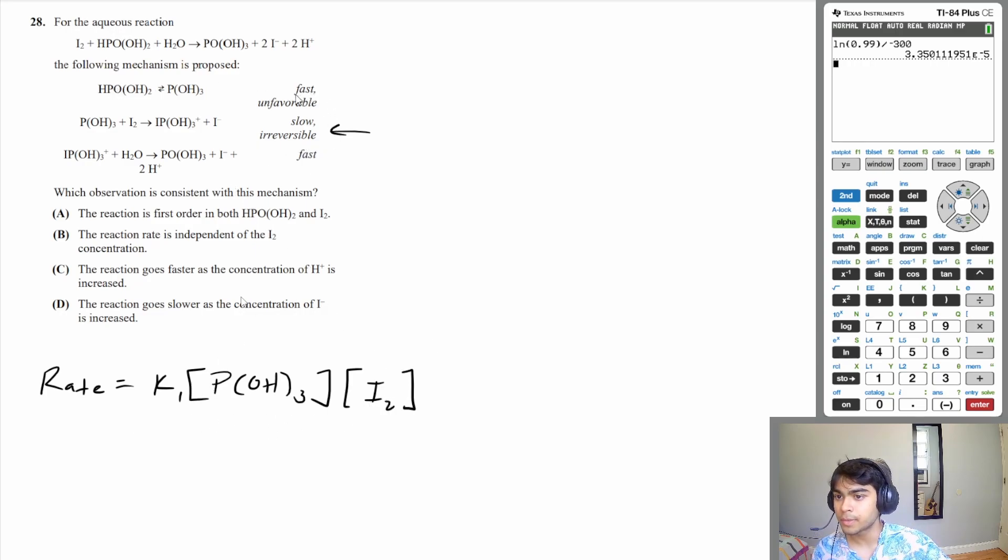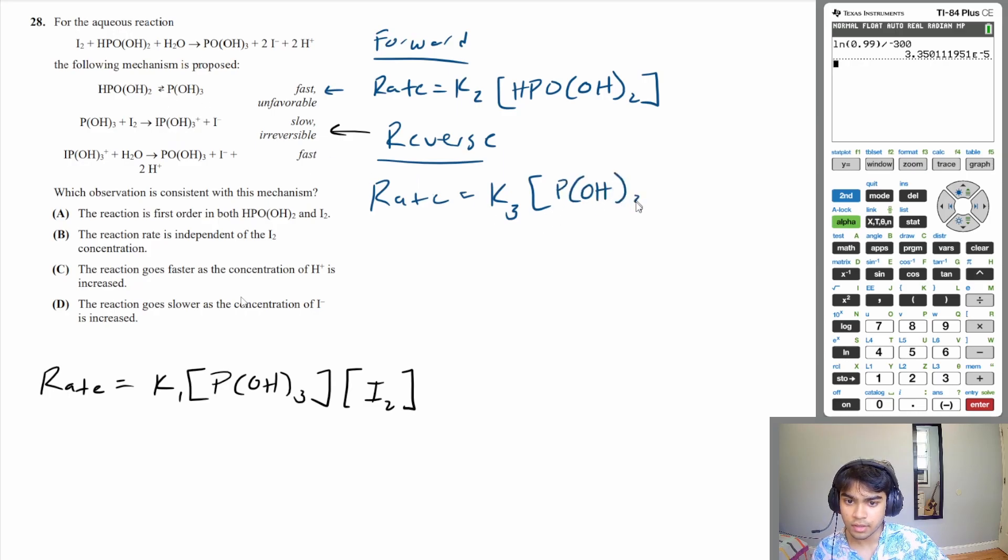Well, you have to look at your fast equilibrium step, which is this one here. Now, this reaction is helpful because you know that the rate of the forward reaction is going to equal the rate of your reverse reaction. So what is going to be the forward reaction? Let's say forward reaction. Well, the rate is equal to, let's just call it K2, K2 times the concentration of your reactant, which is HPOOH2. And then the reverse reaction is going to have a similar format. So rate is equal to, let's call that K3 times that of the product, which is POH3. Now, as we said before, the rate of the forward reaction is going to equal the rate of the reverse reaction.